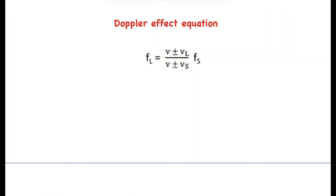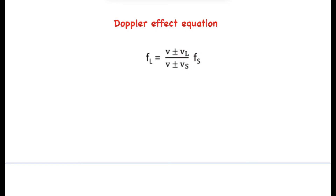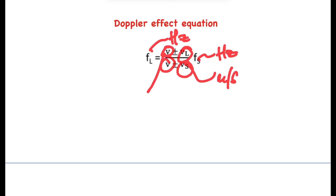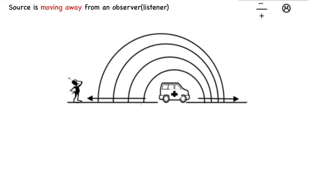The Doppler effect equation is a standard equation you'll be given in the formula sheet. It states: frequency of the listener equals the velocity of sound — depending on the medium, whether air, liquid, or solid — plus or minus the velocity of the listener, divided by the velocity of sound plus or minus the velocity of the source, all multiplied by the frequency of the source. Frequency is measured in hertz, and all velocities must be in meters per second, including the velocity of sound.